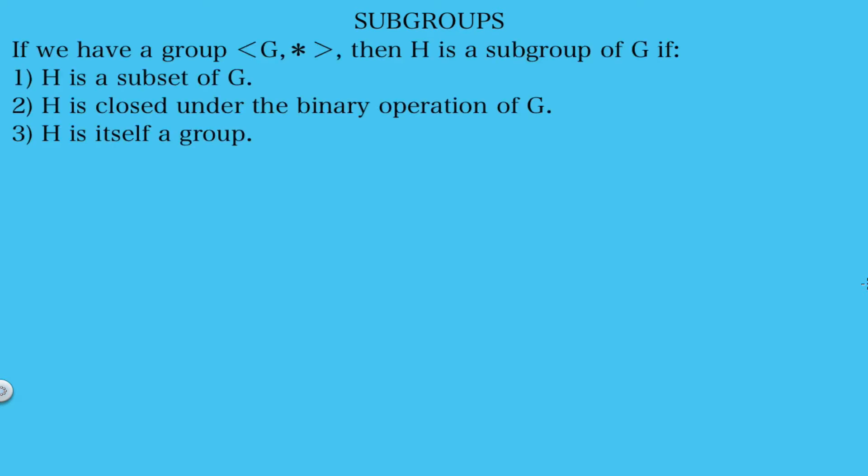In this video we're going to talk about subgroups. A subgroup is exactly how it sounds — it's a group within a group. So if we have a group G, then we say H is a subgroup of G if it meets these three requirements: H must be a subset of G, H must be closed under the binary operation of G, and H itself must be a group with the binary operation of G.